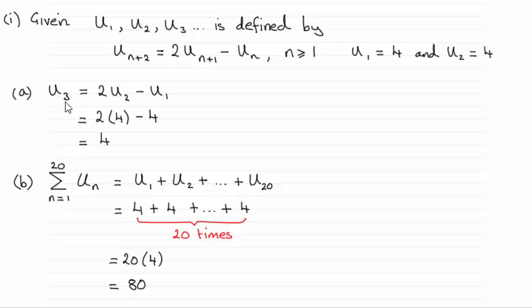So in order to get U3, all you need to do is set N equal to 1 in this recurrence relationship. When N equals 1, you get U3, which is what we want, equals 2 lots of the second term, U2, minus U1, the first term. So all I've done is substitute those values for U2 and U1 that we were given, and you end up with 2 times 4 minus 4, which is 8 minus 4, which is 4.